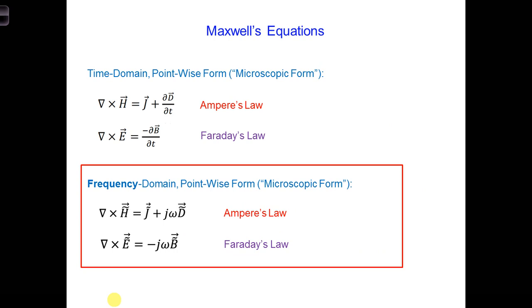We can also write Maxwell's equations in the frequency domain, or the sinusoidal steady state, where all the time derivatives are written as j omega. So d/dt is now j omega, and the electric and magnetic fields are now vector phasors.